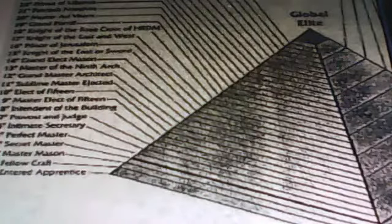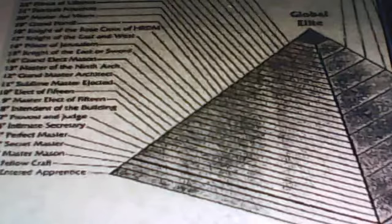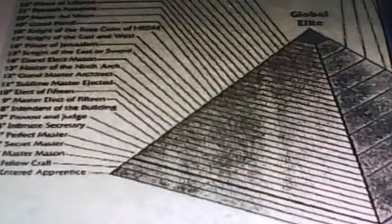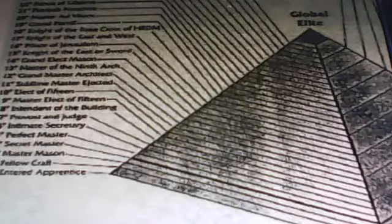We go on to the Master of Mitim, Grand Pontiff, Knight of the Rose Cross, Knight of the East and West, Prince of Luson, Knight of the East and Sword, Grand Elect, Master of the Ninth Arc, Grand Master Architect, Wipe Master Elected, Elective 15, Master Elective 15. I've also heard of this as the Elus.